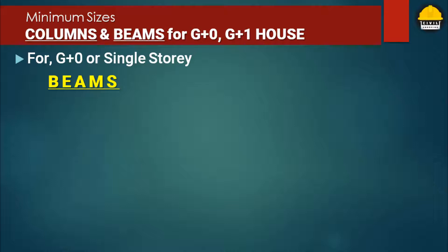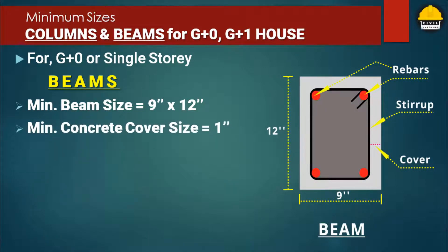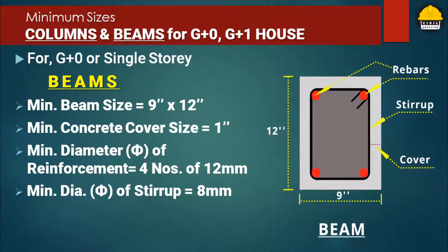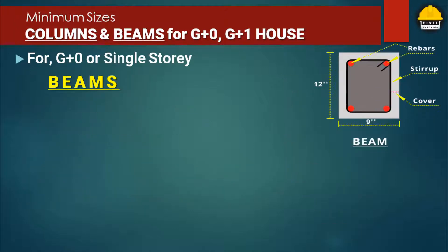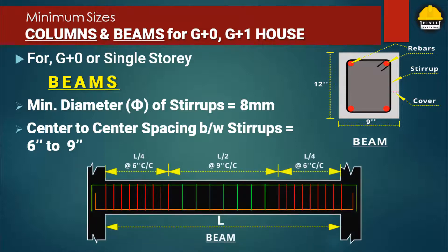Now for beams of a one storey ground floor house: the minimum beam size should be 9 inch by 12 inch or 230 mm by 300 mm. Minimum clear cover for protection against moisture and fire should be 1 inch or 25 mm to the reinforcement steel. Minimum diameter of main reinforcement steel is 12 mm with four numbers of bars for holding and resisting the force in the beam. Stirrups of minimum diameter 8 mm are to be provided with center to center spacing of 6 inch to 9 inch or 150 mm to 230 mm.